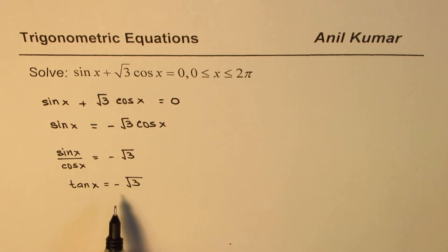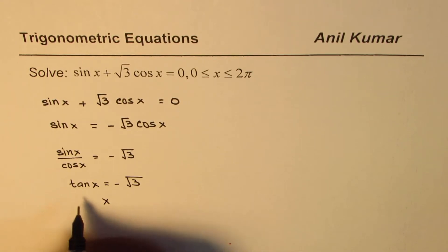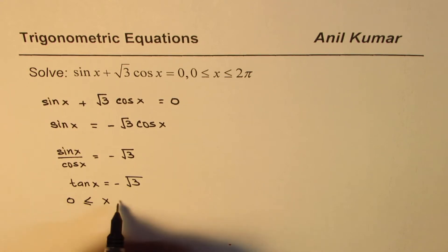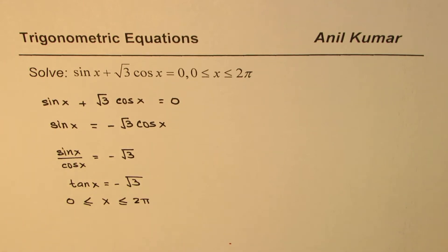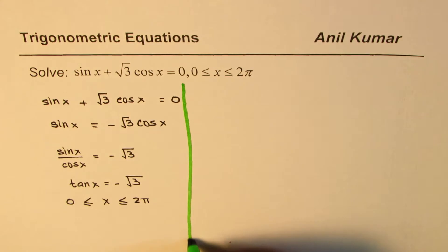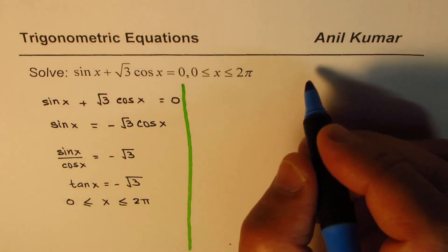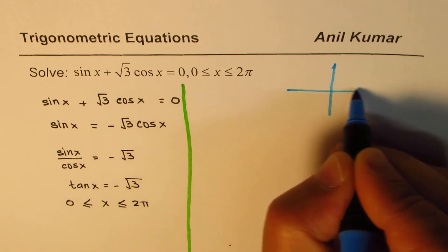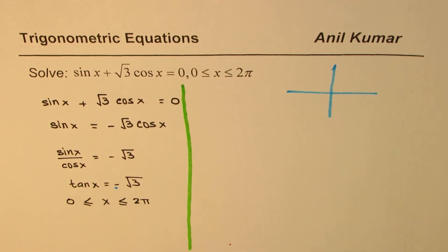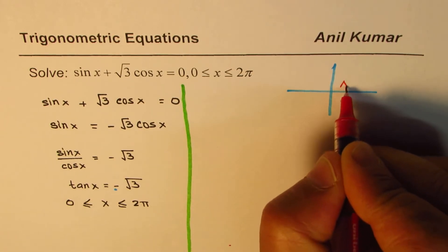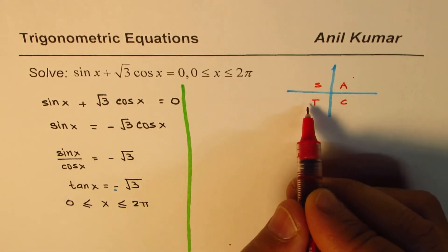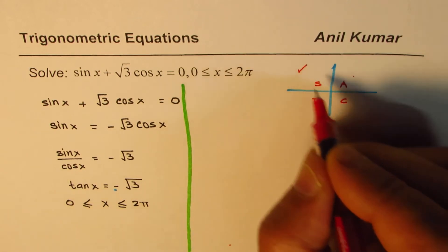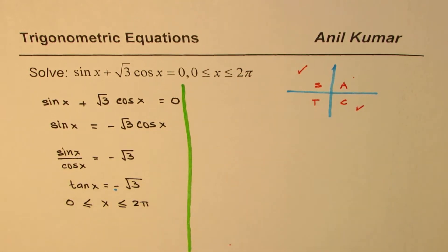Now we have to write down all the solutions for x in the domain 0 to 2 pi. We consider the coordinate plane, and the first thing to look at is when is tan negative? Using the CAST rule, tan is positive in quadrants 1 and 3, so it is negative in quadrants 2 and 4. So we look for solutions in quadrant 2 and in quadrant 4.